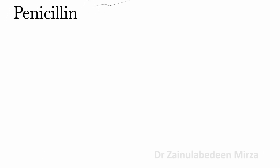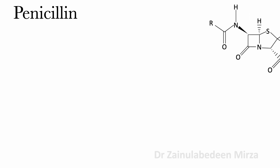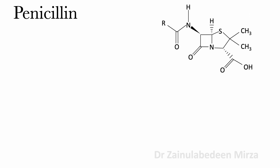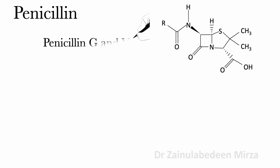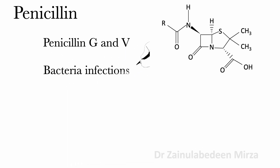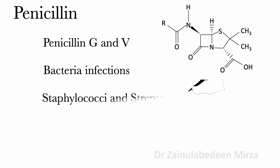Penicillin is known as an antibiotic obtained from penicillin mold. Penicillin G and V are two types of penicillin, and these antibiotics are effective against many infections caused by bacteria such as Staphylococci and Streptococci.